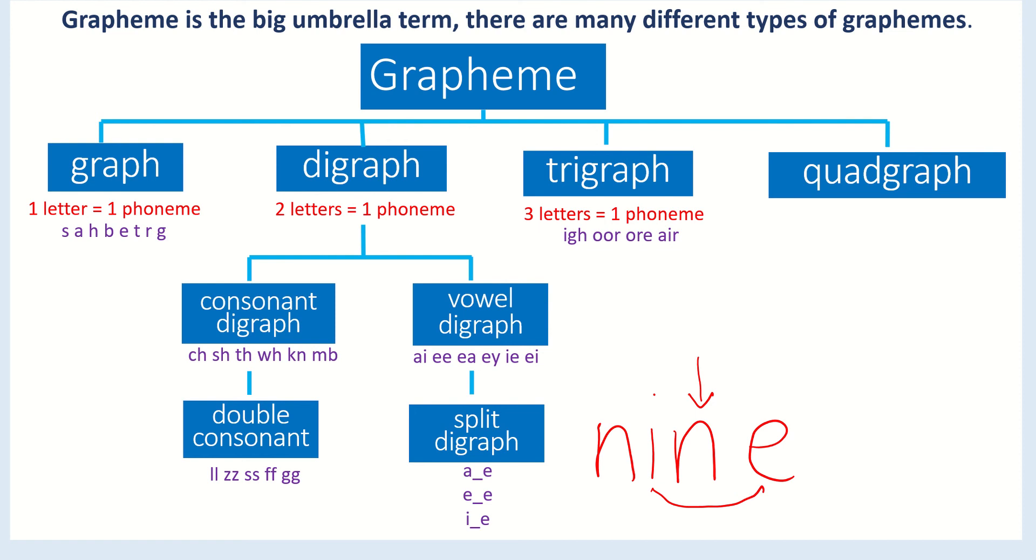And next, quadgraph. And a quadgraph is four letters equaling one phoneme. And you might not think there are many but there are quite a few. Here are some examples: got aigh, eigh, ough, or augh. And they all are four letters but make one phoneme only.